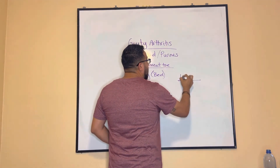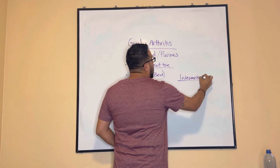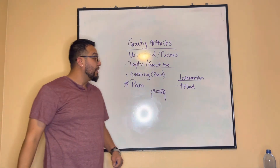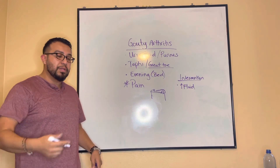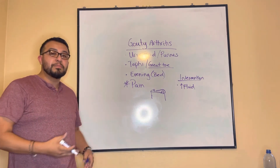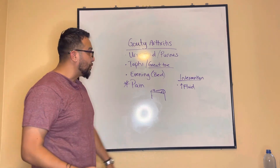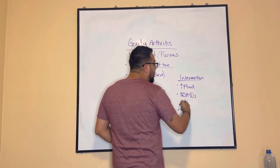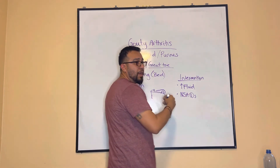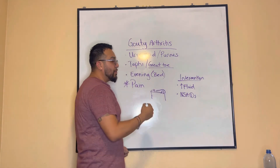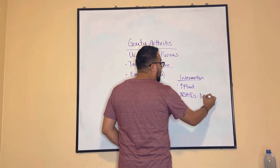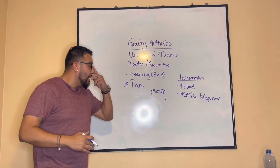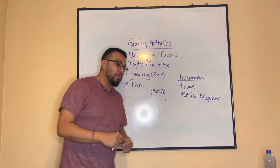When it comes to interventions, increase fluid intake — usually more than two liters a day — because it dilutes the uric acid in the body and decreases the likelihood of crystals depositing in the joints. Medications such as NSAIDs, allopurinol, and probenecid are given for maintenance of gouty arthritis.